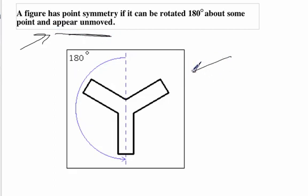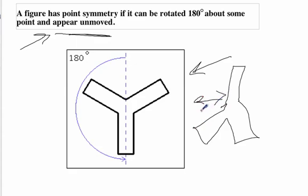So if we look here at our original shape, if you just turn it upside down, then it doesn't look the same, right? It originally looked sort of like this. Those are not the same. So this does not have point symmetry.